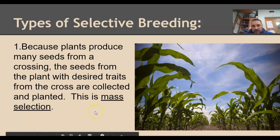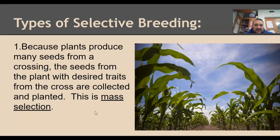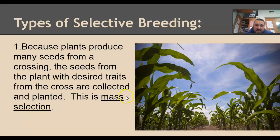Speaking of corn, corn produces lots and lots of seeds. Plants in general produce lots and lots of seeds. The type of selective breeding with plants is called mass selection — mass meaning many. M-A-S-S means many in Latin; that's where it comes from.